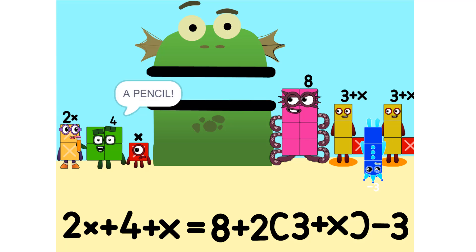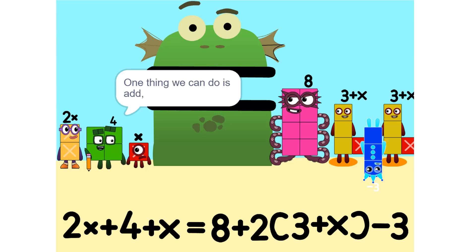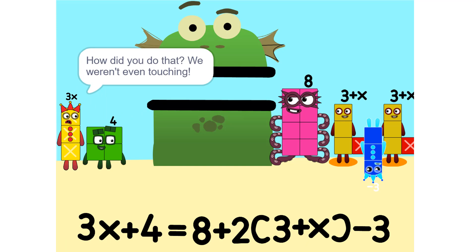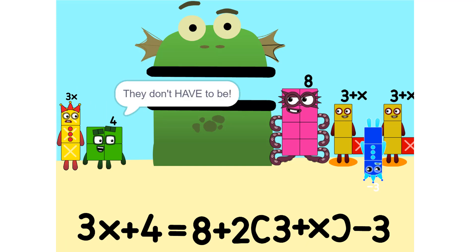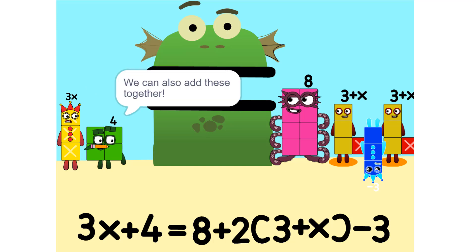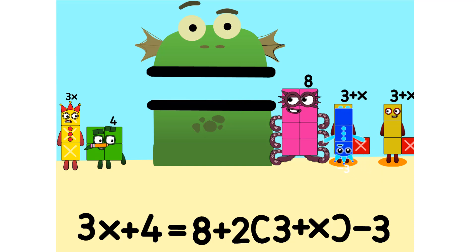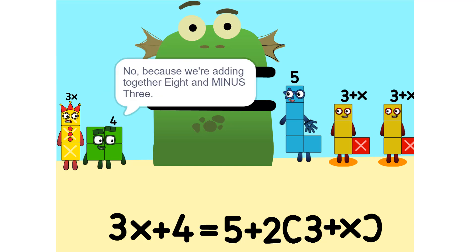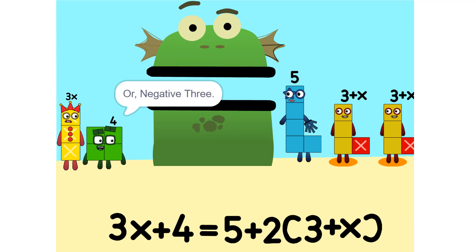And use a pencil. So let's get started. One thing we can do is add these two together. How did you do that? We weren't even touching. They don't have to be. Could we do it if we were touching? Yeah. We can also add these together. Five. Wouldn't it be 11 since 8 plus 3 is 11? No, because we're adding together 8 and minus 3, or negative 3. So it's 5.